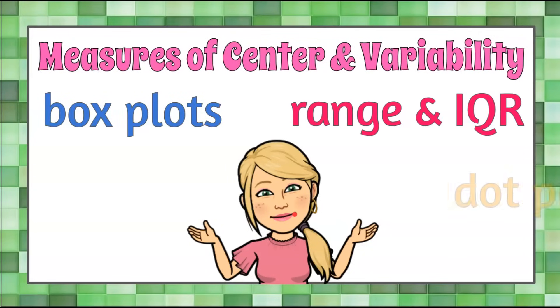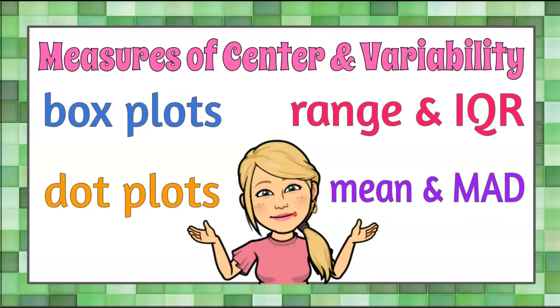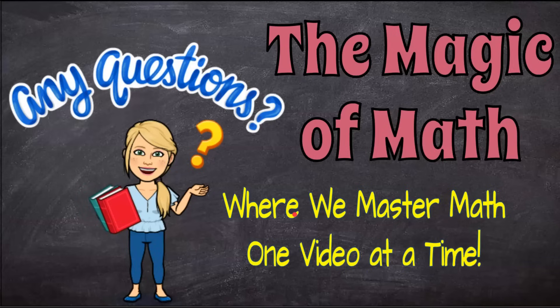So there you have it — measures of center and variability using box plots and dot plots: range, IQR, mean, and MAD. Thank you for joining me at The Magic of Math, where we continue to master math one video at a time. Hope you'll come back soon, and have a great day!